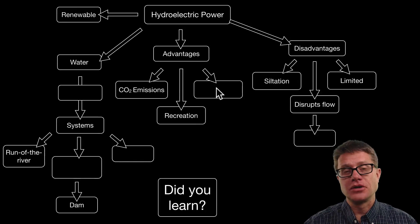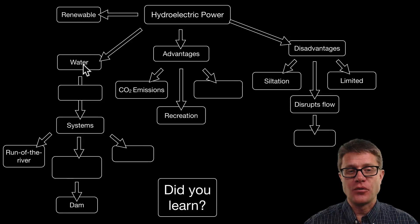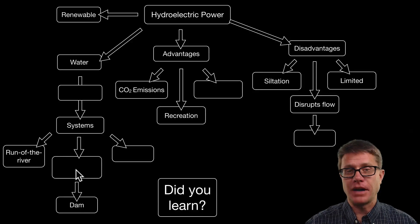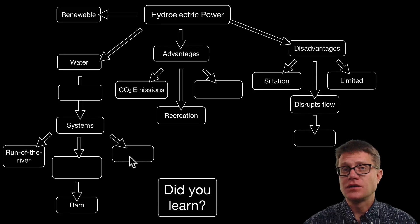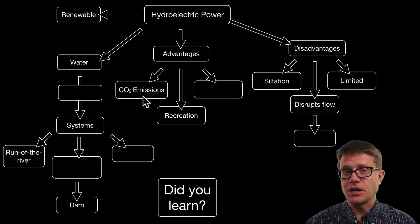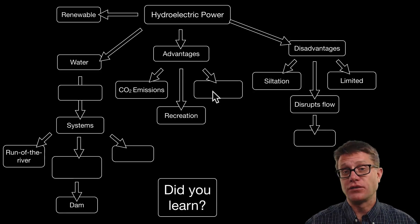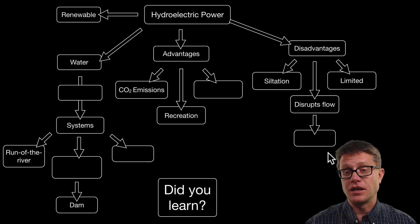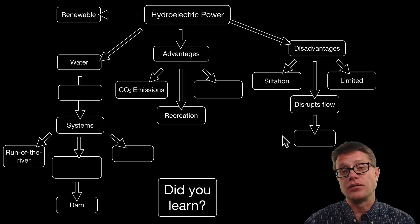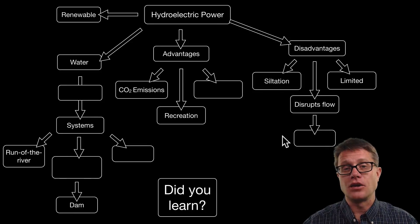In summary: hydroelectric power is a renewable form of energy where water flows through a turbine. Systems can be run of the river, impoundment, or tidal. Advantages include lower carbon dioxide emissions, increased recreation, and flood reduction. Disadvantages include siltation, disruption of natural river flow, limited viable sites, and the inability of spawning fish — like salmon — to make their way upstream. That is hydroelectric power and I hope that was helpful.